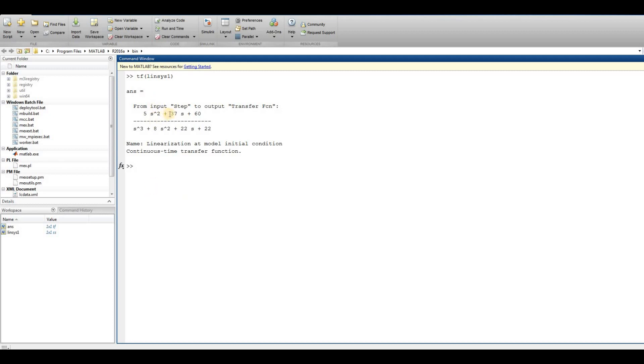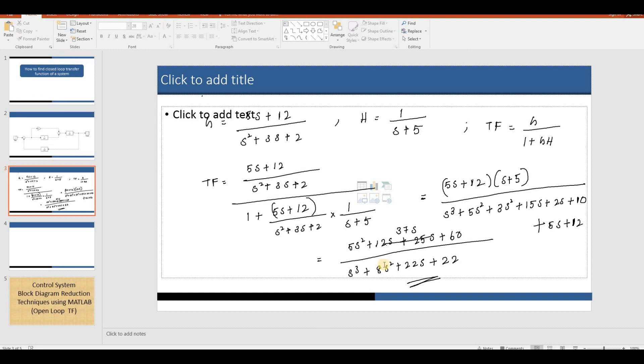Here we can see (5s²+37s+60)/(s³+8s²+22s+22). This is the same expression we obtained mathematically.